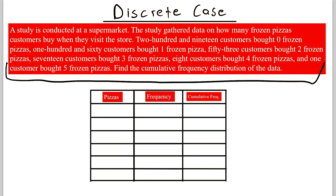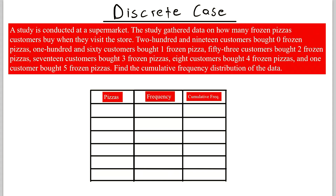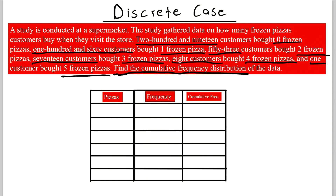So here we have a made-up study for us to work through. A study is conducted at a supermarket. The study gathered data on how many frozen pizzas customers buy when they visit the store. 219 customers bought zero frozen pizzas, 160 customers bought one frozen pizza, 53 customers bought two frozen pizzas, 17 customers bought three frozen pizzas, 8 customers bought four frozen pizzas, and one customer bought five frozen pizzas. Find the cumulative frequency distribution of the data.